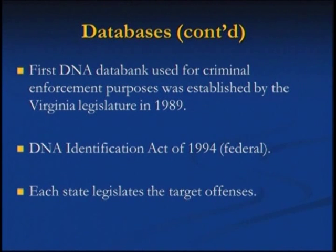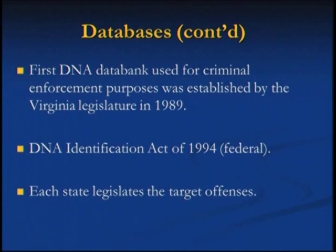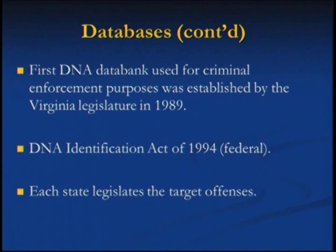Each state legislates its own targets. DNA from Cuyahoga County gets uplifted to the state database, and then all states uplift to the FBI database, where the FBI runs it. You're running forensic samples — crime scene samples — against known offenders. And they can get a cold hit — without a suspect. We have no suspect in this case, but we can get a cold hit. The controversial part was who should be in the database.